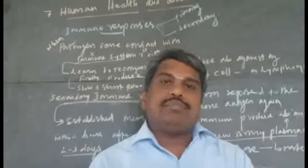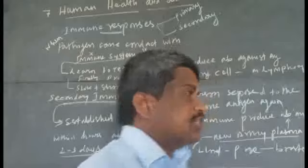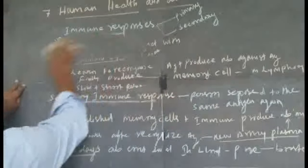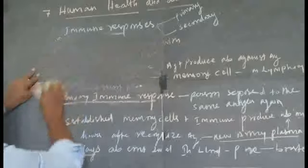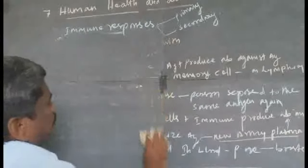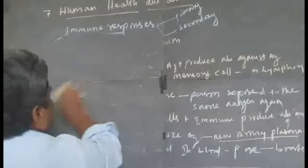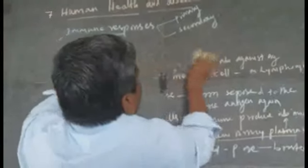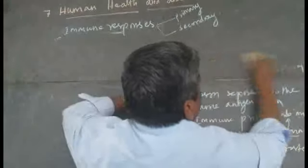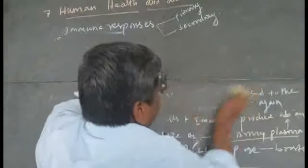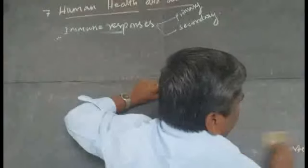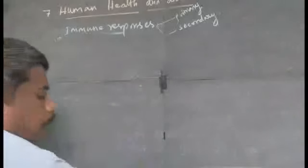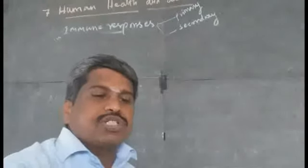Now, what are the differences between primary immune response and secondary immune response? The difference between active and passive immunity was discussed in the last class. The difference between primary and secondary immune response is also very important — it could appear in the exam.